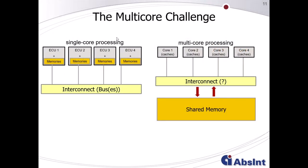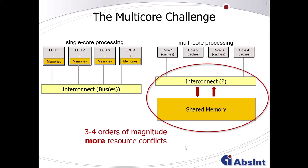If you migrate from a distributed single-core processing system with several ECUs and local memories connected through an interconnect bus, to a more central multi-core processing system where you no longer have local memories and instead access one shared memory, there is a new challenge: the interferences and blocking effects that may occur. Migration studies have shown that you may have three to four orders of magnitude more resource conflicts, and may even slow down the entire system more than you would gain by parallelization.